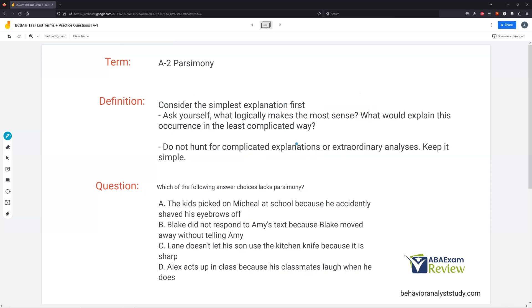Parsimony. Consider the simplest explanation first. This is my favorite assumption. You need to get really good at thinking of simple explanations. When you work with clients, or maybe you work with students, or whoever you work with, they tend, because they're not trained like you are to go with more complex ideas. We have very complex explanations for behavior, when a lot of times the simplest explanation is really the right one. You got to ask yourself, what logically makes the most sense? What would explain the occurrence in the least complicated way? And you start there. And if that doesn't explain it, then slowly move to the more complex. Don't hunt for complicated explanations or extraordinary analysis. You just keep it simple. As you rule out simple explanations, get more and more complicated. You're just going to make things more difficult by trying to come up with very complex ways why this behavior might be occurring.